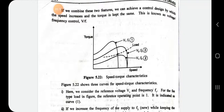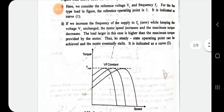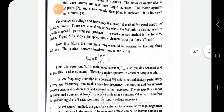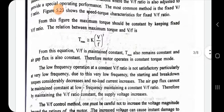By varying the V/f ratio, when we change the speed of the induction motor, simultaneously the V/f ratio is fixed — corresponding voltage and frequency values are adjusted together. By fixing the V/f ratio, speed control is achieved. The maximum torque is given by T_max = k·(V/f)², so torque remains constant and air gap flux also remains constant, allowing the motor to operate in a constant torque mode.